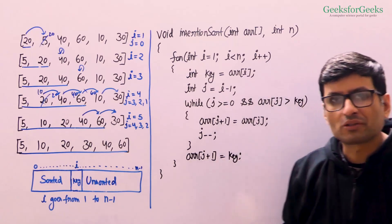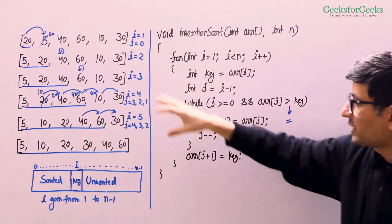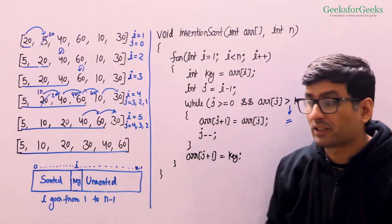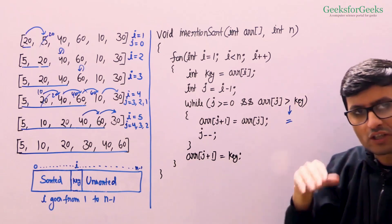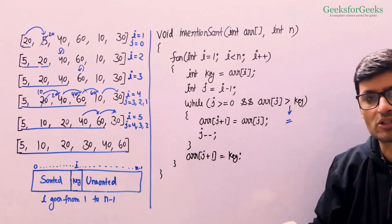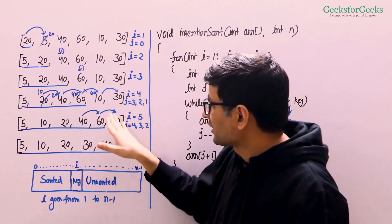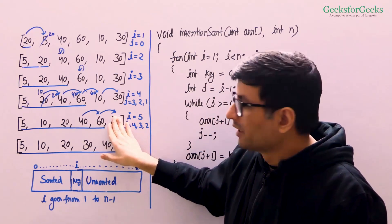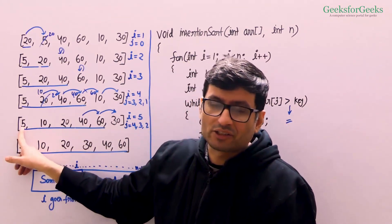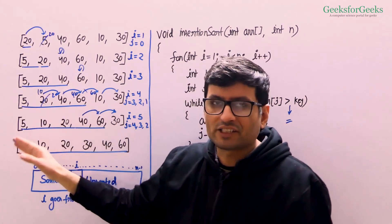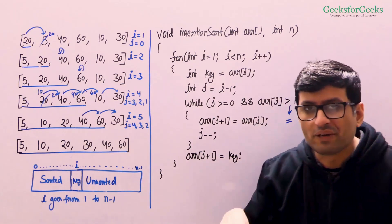Why don't we have an equal-to sign in the condition? This logic would still work with an equal sign, but then the algorithm would not be stable. By keeping only the greater-than sign and not considering equal, we ensure the algorithm is stable. For example, if there are two occurrences of five, we stop at the first five and don't move it, preserving its original order. That's the advantage of not putting the equal-to sign — the algorithm remains stable.